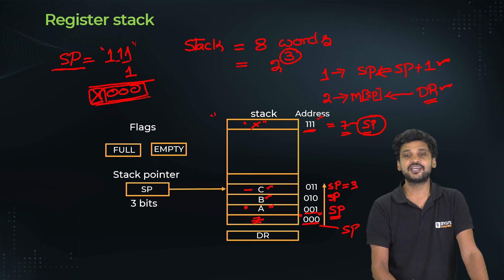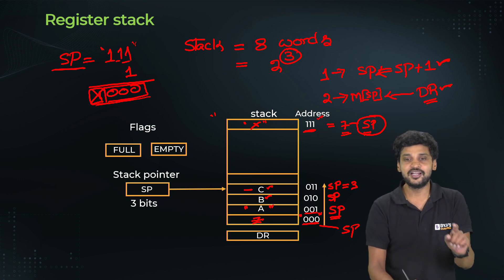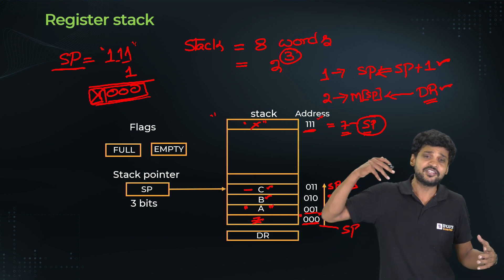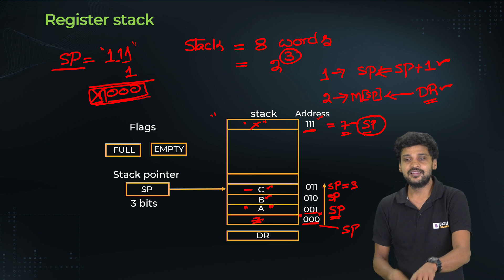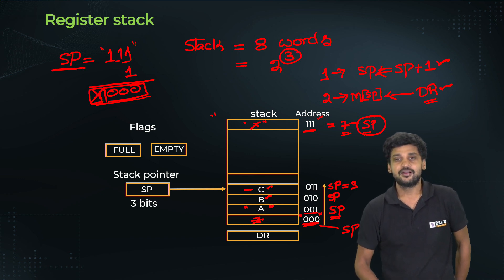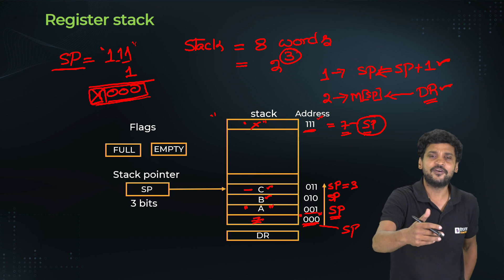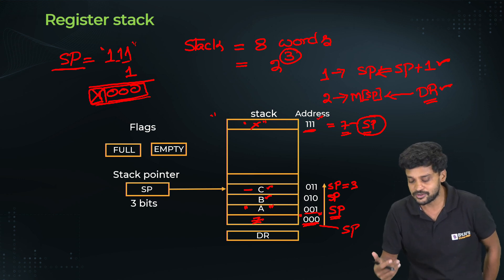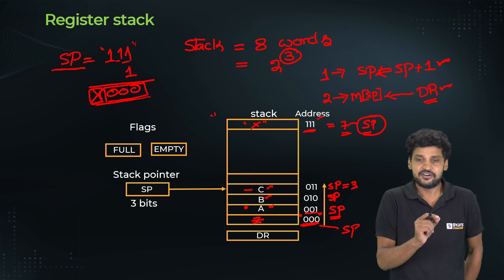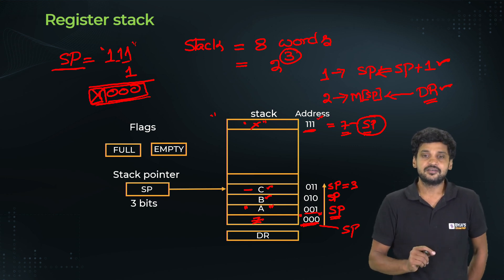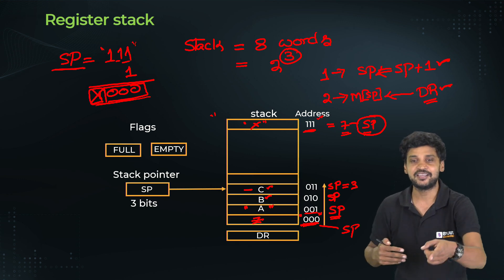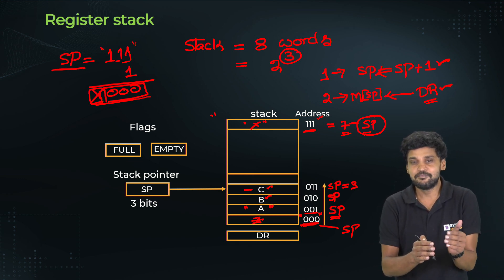There is only one boundary for the register stack. Whether the stack is completely empty or completely full, the stack pointer shows 000. Before any element is pushed, SP = 000 (empty). After the final element is pushed, SP wraps back to 000 (full). Therefore, address 000 is the boundary for both ends of the stack.